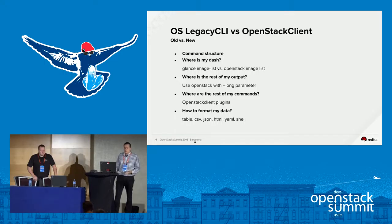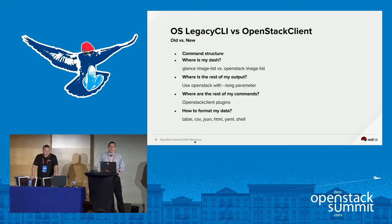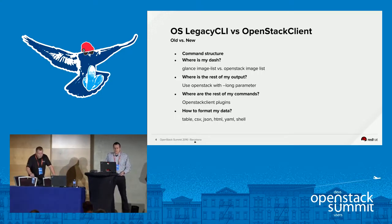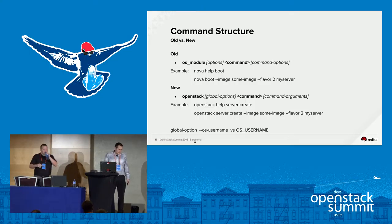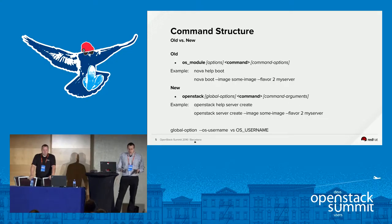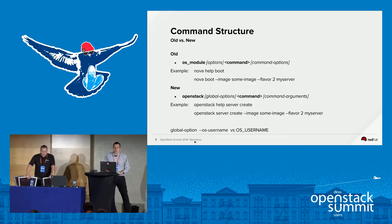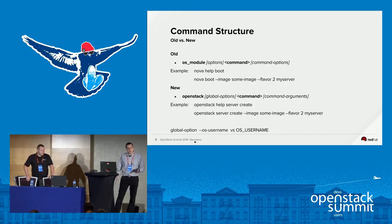I'm going to do a comparison between legacy CLI and OpenStack Client. I'll start with command structure and then try to answer questions people usually ask when switching from one to the other. The command structure is pretty similar, with one major difference: the legacy CLI would start with the OpenStack module, then options like tenant name or username, then the command itself — Nova boot is one example.